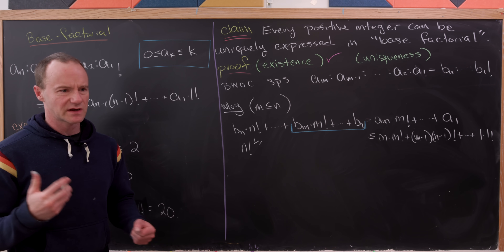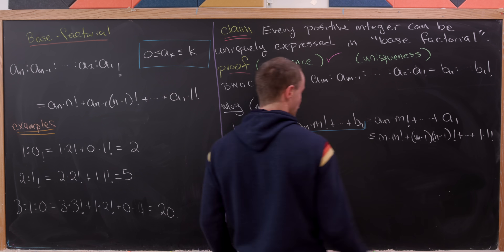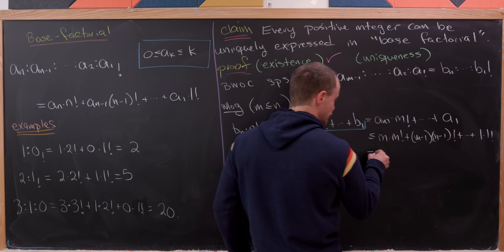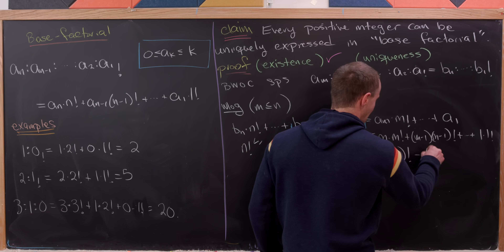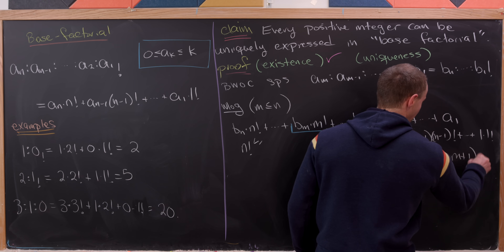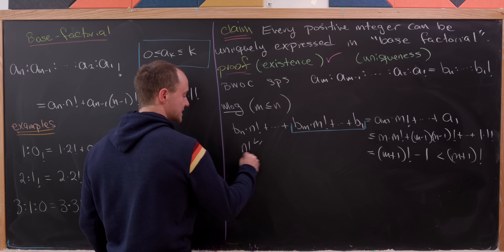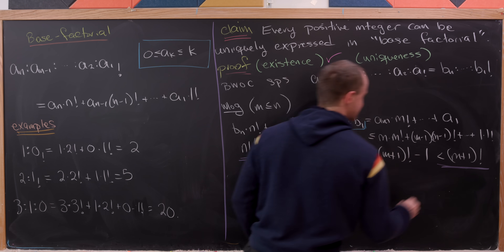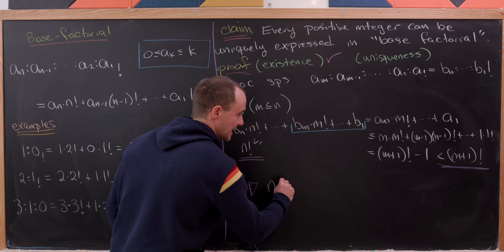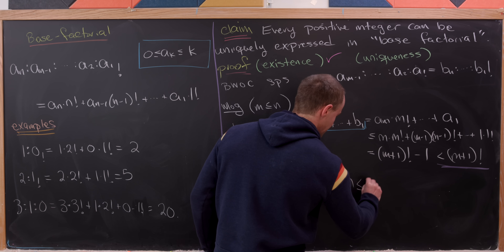I'll use a well-known fact — provable by induction — that m times m! plus (m−1) times (m−1)! all the way down to 1 times 1! equals (m+1)! − 1, which is strictly less than (m+1)!. So we've got n! strictly less than (m+1)!, which tells us n is strictly less than m+1, in other words n ≤ m.